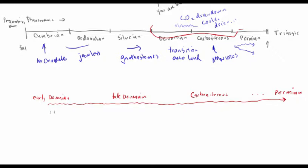Looking at the fossil record and the geological strata, the early Devonian was characterized by warm, temperate, seasonal flooding. It was a really nice time to be a living organism — things were considerably warmer than they are today. The important feature is that we had seasonal flooding and the formation of gigantic inland seas, which were largely of lower salinity — not entirely fresh water, but lower salinity than the oceans.